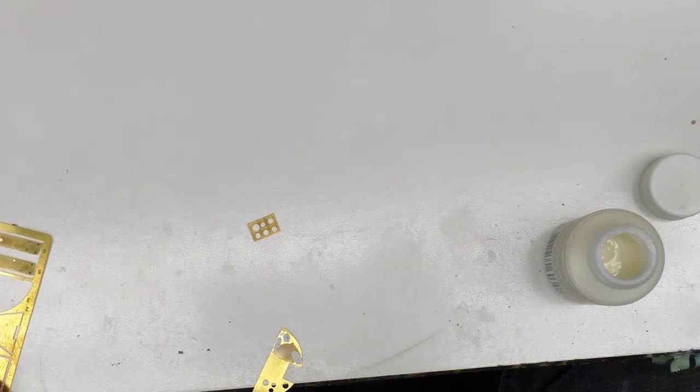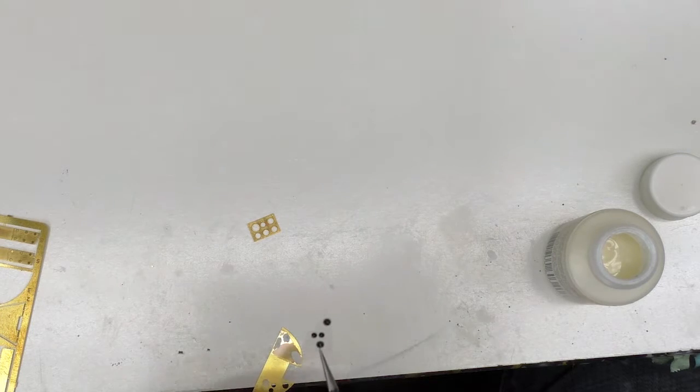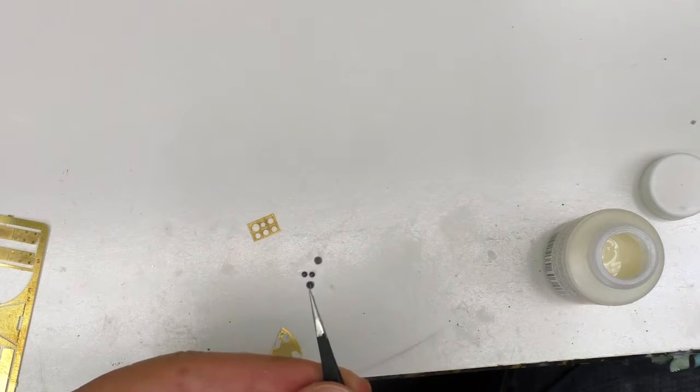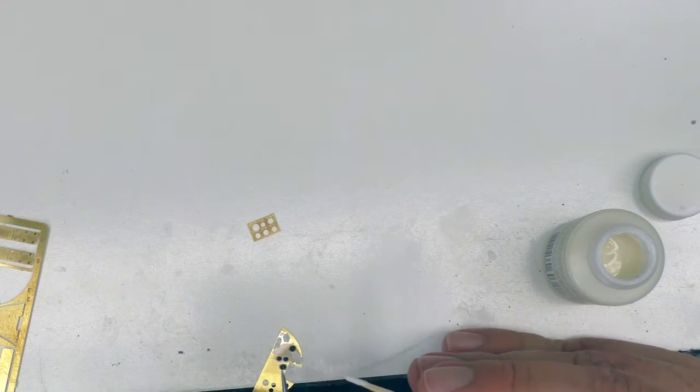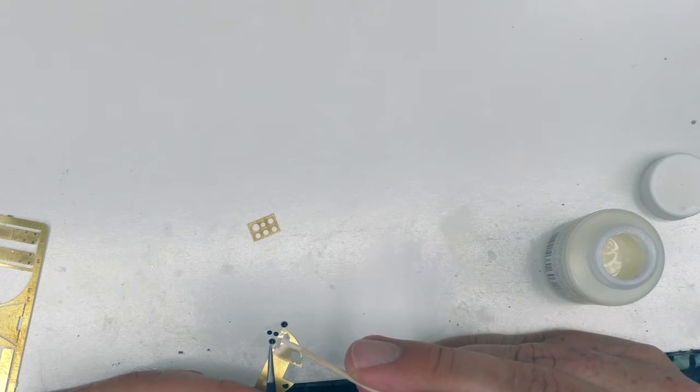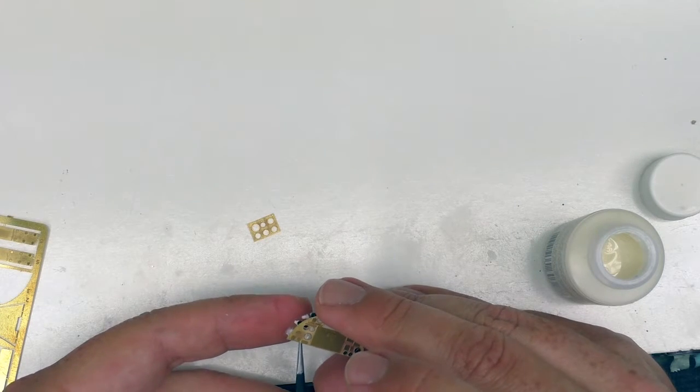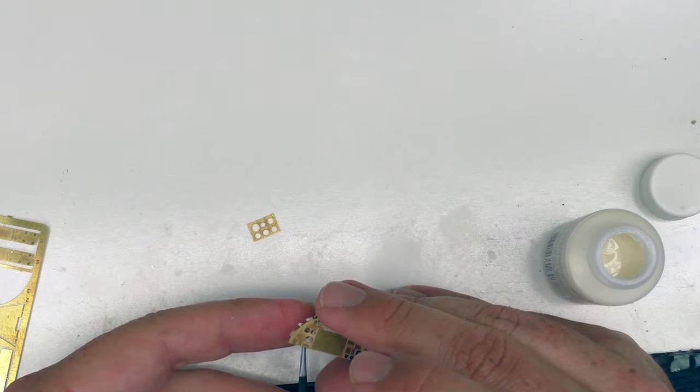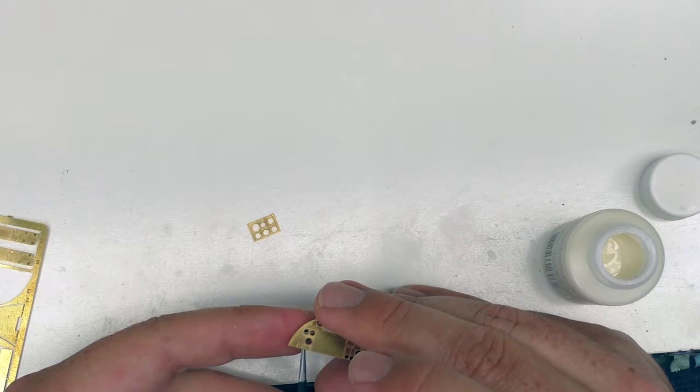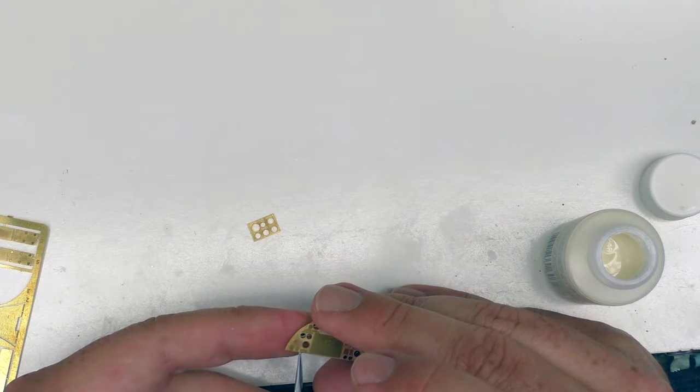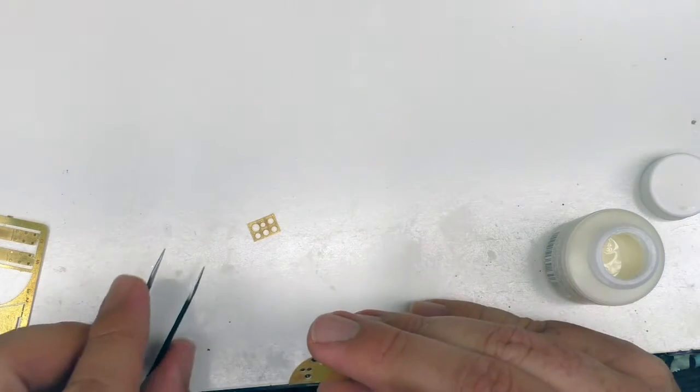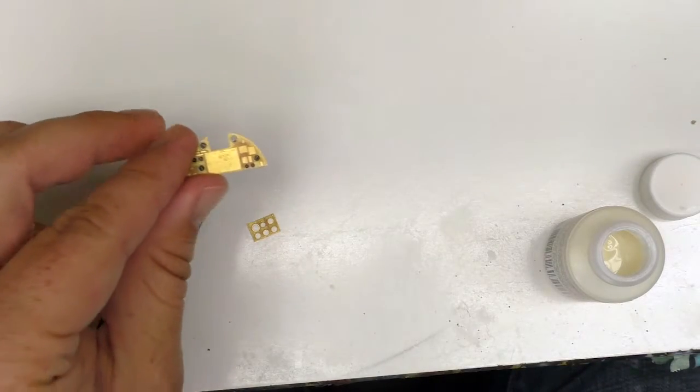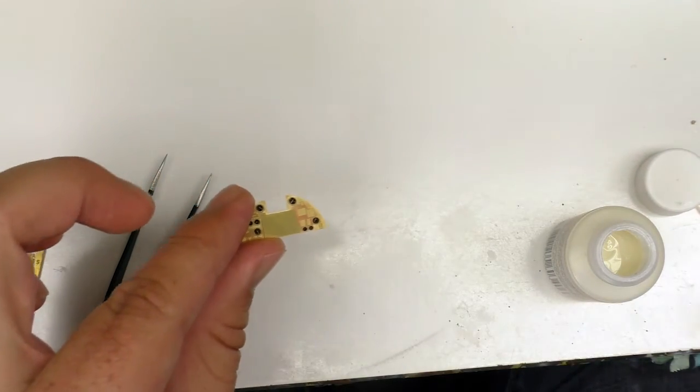Let's get our second piece. The main thing I'm trying to do here is not get too much tweezer over it so I still have room to get glue in here. So there we go. This instrument panel is done.